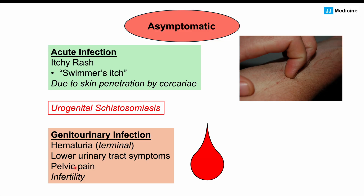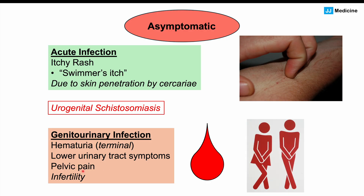Other symptoms include lower urinary tract symptoms such as dysuria or burning sensation when urinating, urinary frequency, and urinary urgency. Pelvic pain or lower abdominal pain can also occur. In male patients, epididymitis and hematospermia — blood in the sperm — can develop. In females, there is an increased risk of infertility and dyspareunia, or pain during intercourse. Chronic infection can also increase the risk of HIV infection.